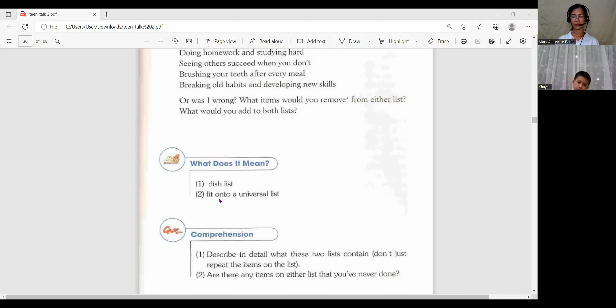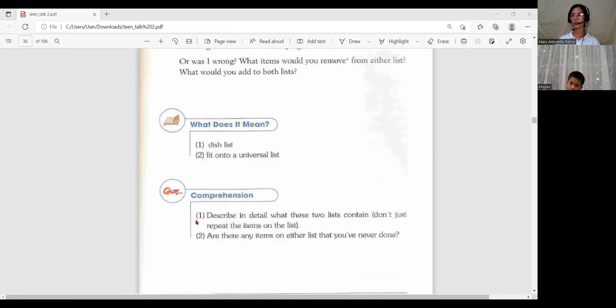Fit onto a universal list. From the word universal or universe, what was it all about? Who are the people involved in the universe? I think it's the one who learned the thing that seemed more difficult. Okay, so fit onto a universal list means that everyone in the world can make and do any kind of list. Anyone in the world, even the poorest people, even the president can make some wish list and dislike list. Now let's go to the comprehension.